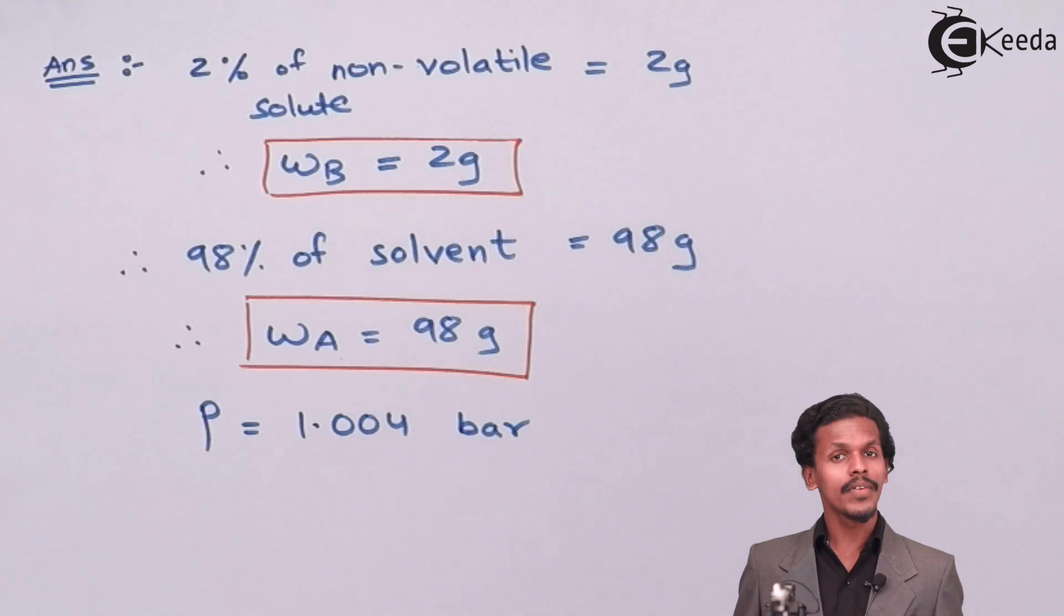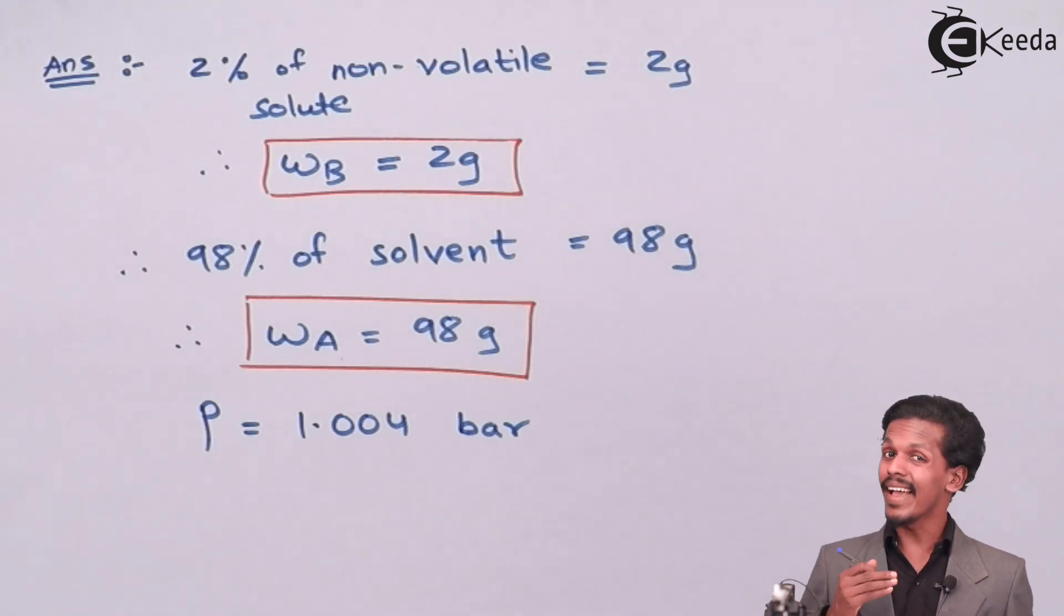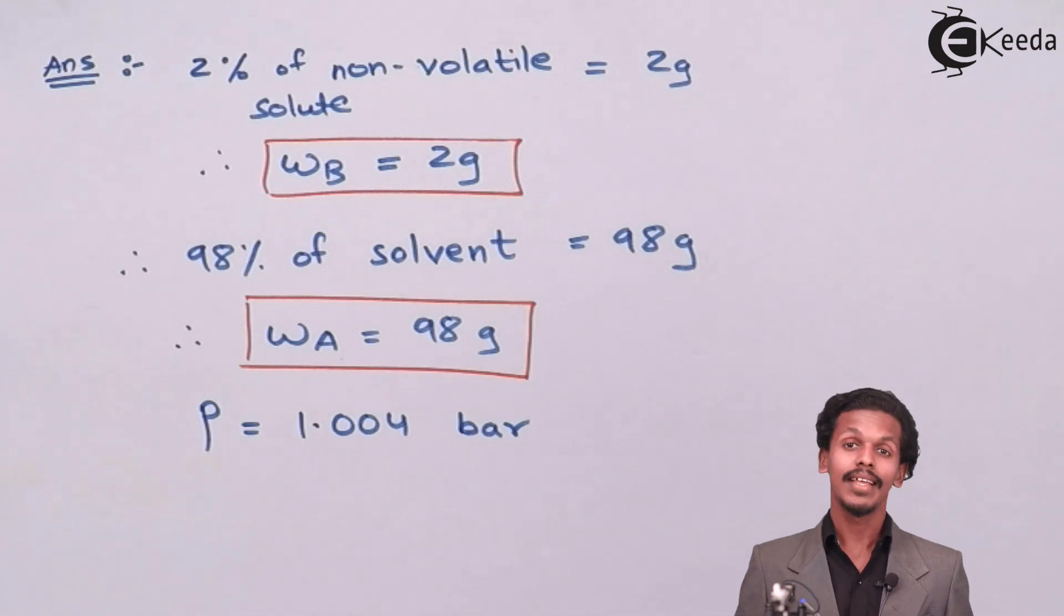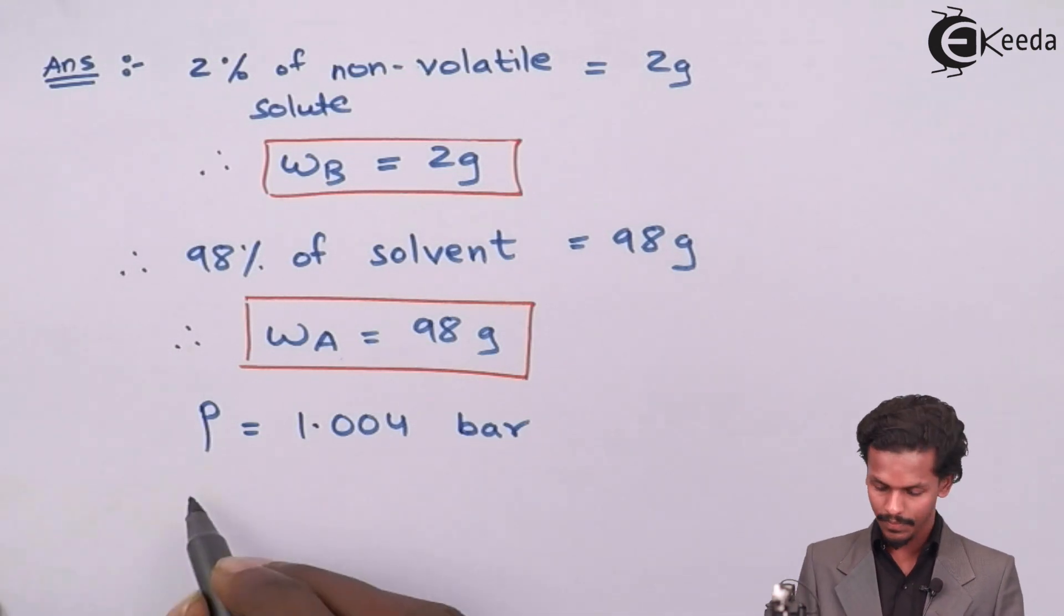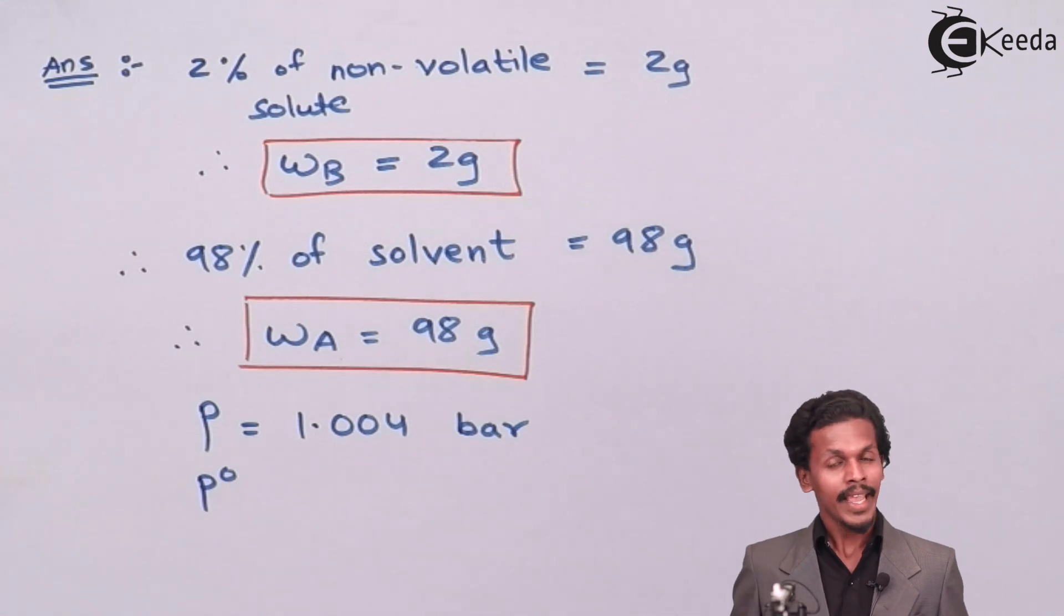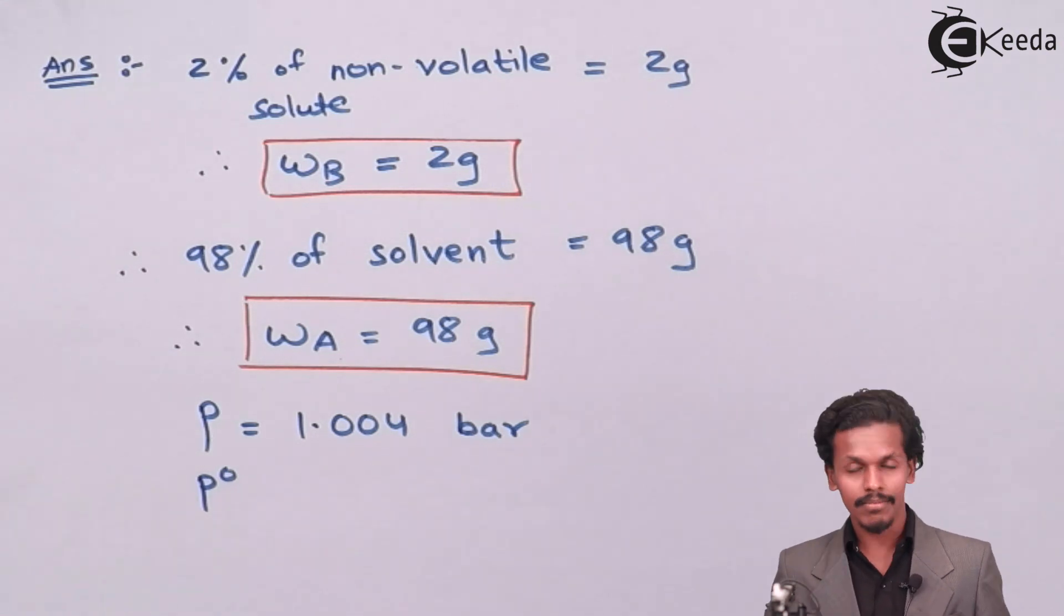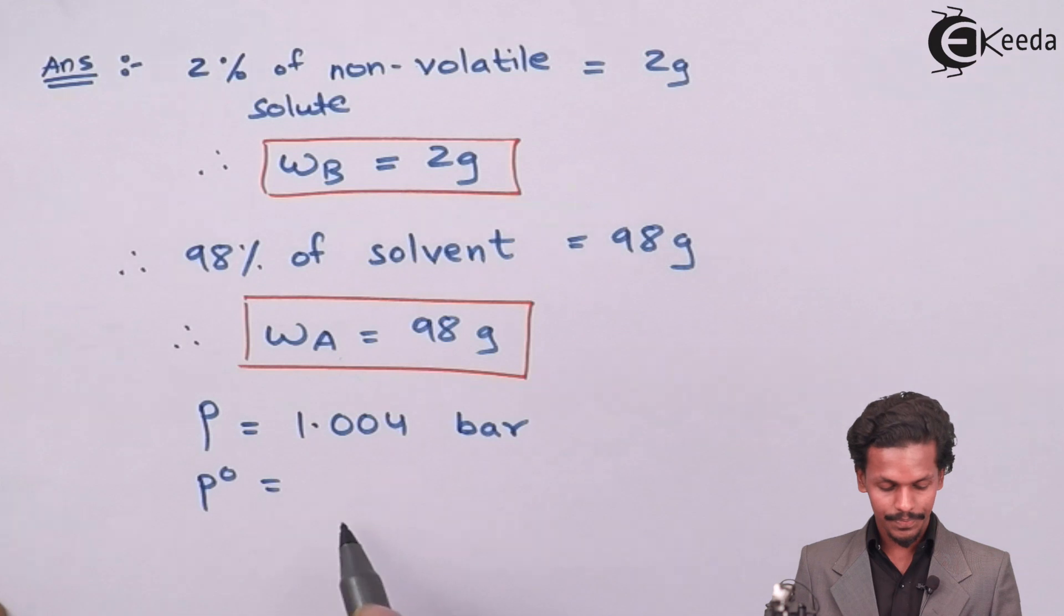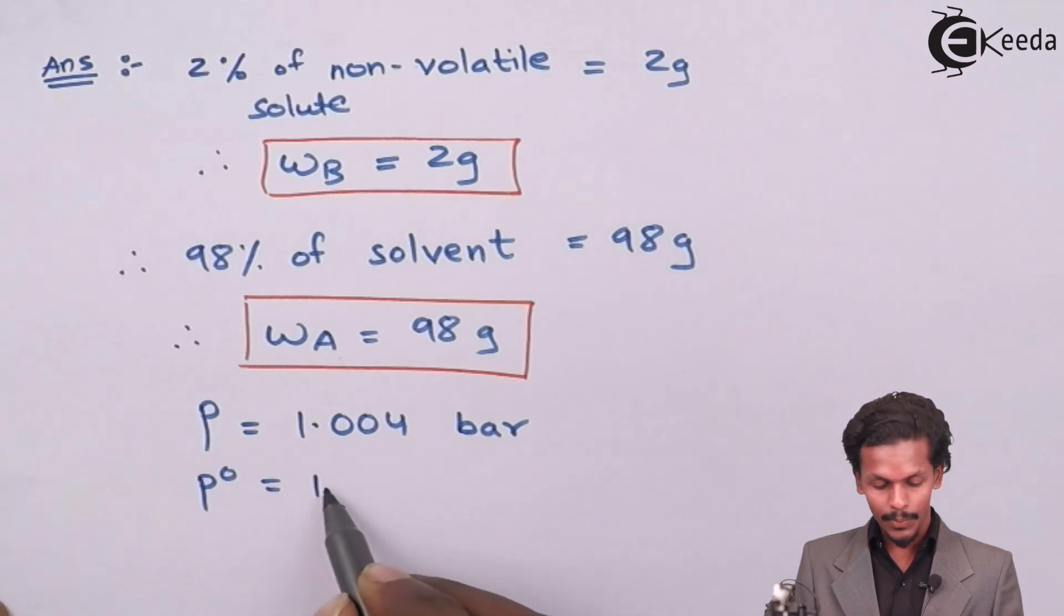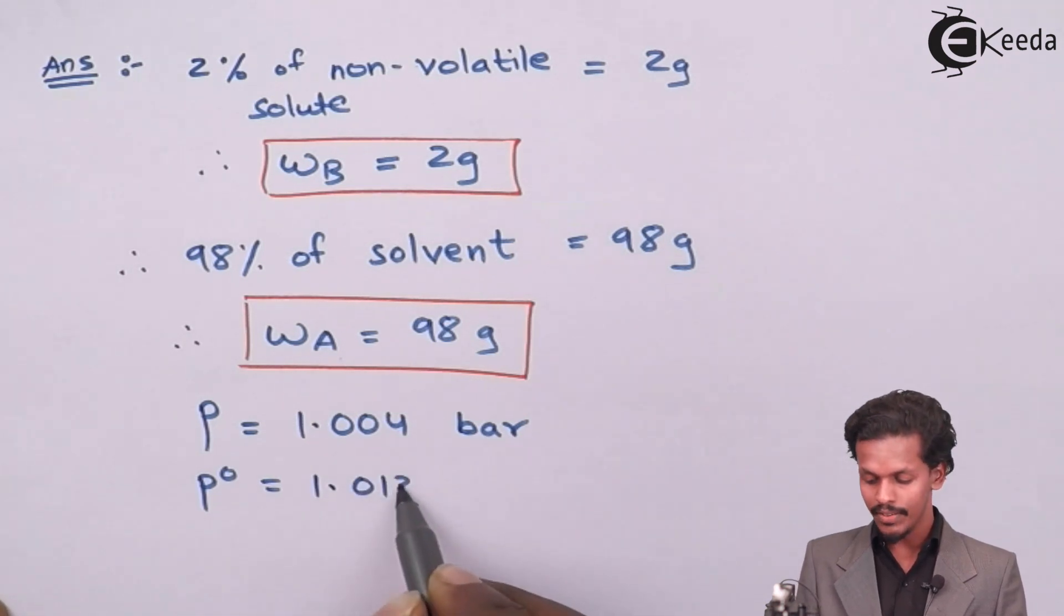While that of the vapor pressure of pure solvent which should be higher than the solution is denoted by P0 and P0 has a value in this question as 1.013 bar.